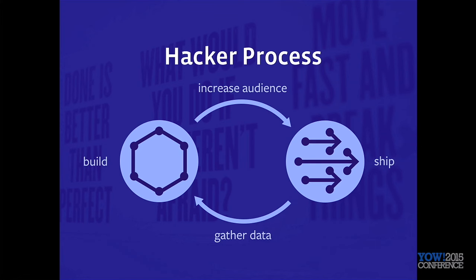So this is how I would typify the process at Facebook — I call it hacker process. It's pretty simple because hackers don't like a lot of process. First thing you have to do is build it. Just write the damn code. If you're in a long brainstorming session arguing about which features to build first, just agree on one feature and build it and ship it as fast as you can, then build the next feature and ship that. There's no better process than that.